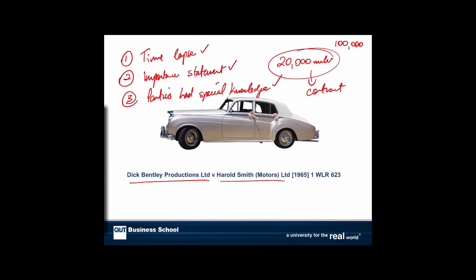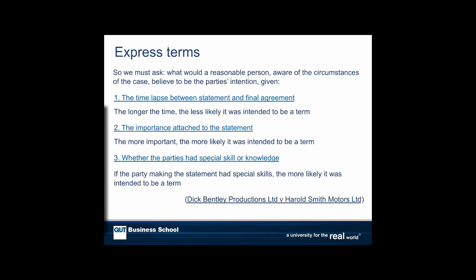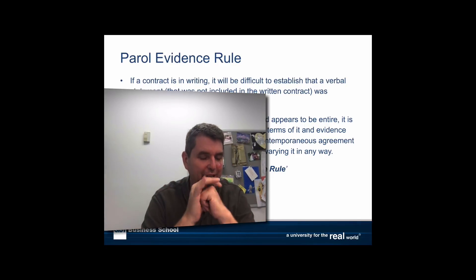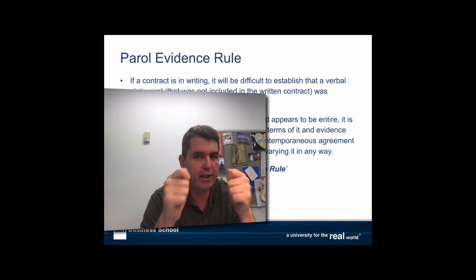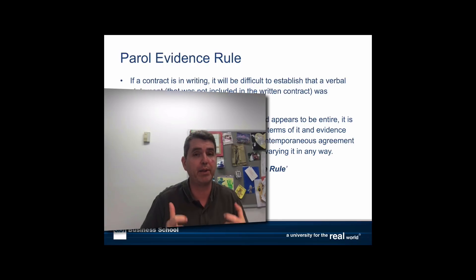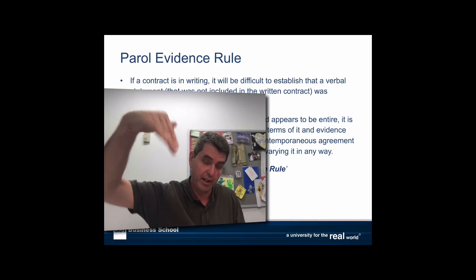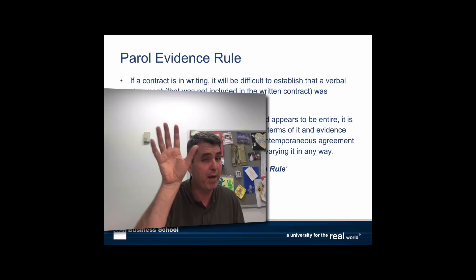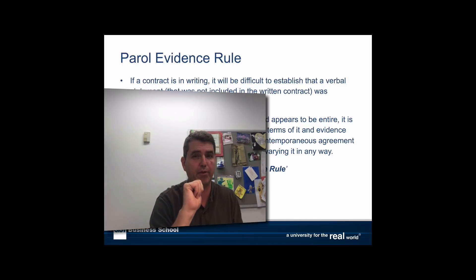So statements made even before the contract can become a term if they meet these three conditions: time lapse, the importance of the statement, and whether one of the parties has special skill or knowledge. Now, contracts can be verbal, written, or a combination — but realistically, if you have a written contract, particularly a signed written contract, it's very hard to get verbal statements made before that contract treated as a term. They will most often be representations, or sometimes what's called a collateral contract. And this is because of the parol evidence rule.